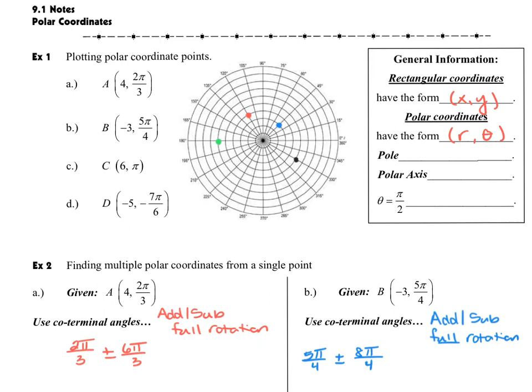Now, we're going to also translate a few things from our rectangular days to a slightly new language. So pole is simply going to be our new word for origin or the point zero, zero.